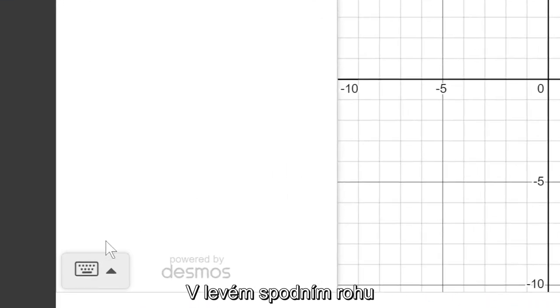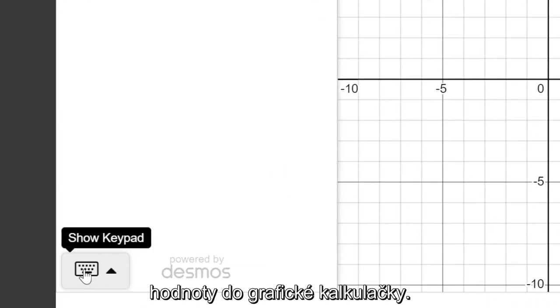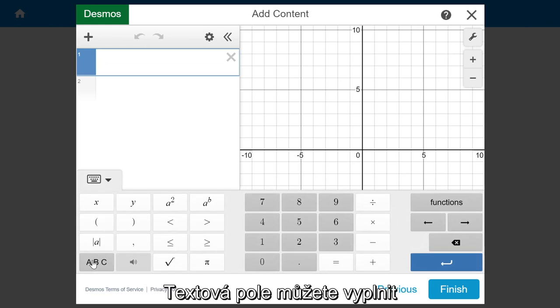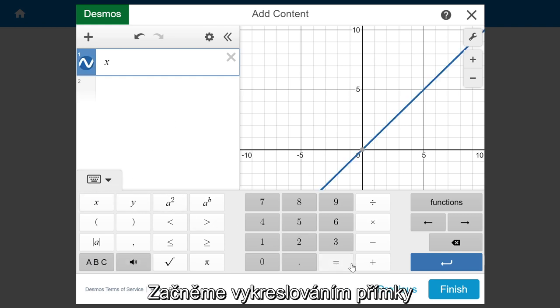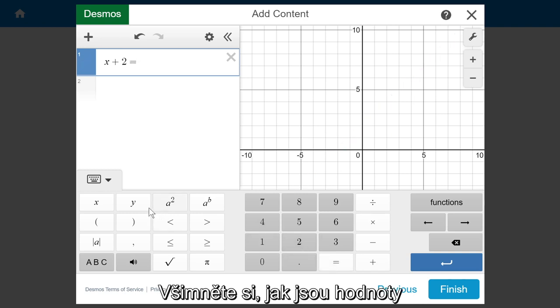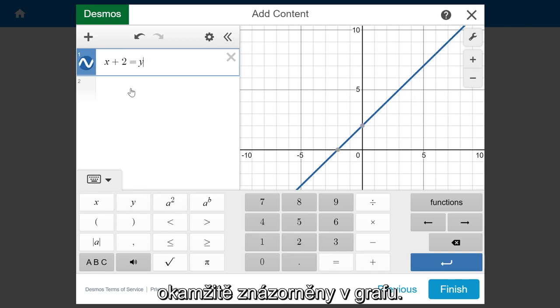In the bottom left hand corner you will see a keyboard that allows you to input values into the graphing calculator. You can fill the text fields with equations using your keyboard or the built-in Desmos keyboard. Let's start with plotting the line x plus 2 equals y. Notice how the values are represented on the graph instantly.